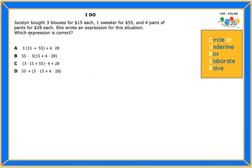Let's get started underlining important information. She bought three blouses for fifteen dollars each, she bought one sweater for fifty-five dollars, and then finally she bought four pairs of pants for twenty-eight dollars each. Now it says she wrote an expression for this situation. Which expression is correct?